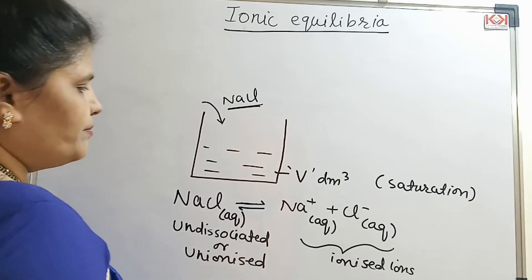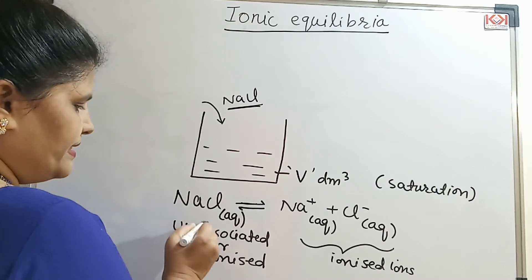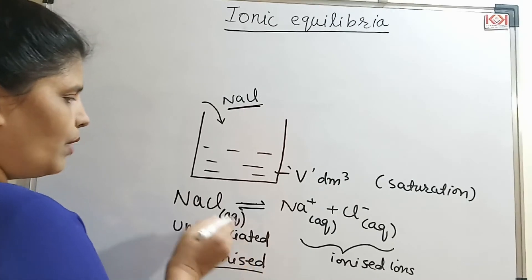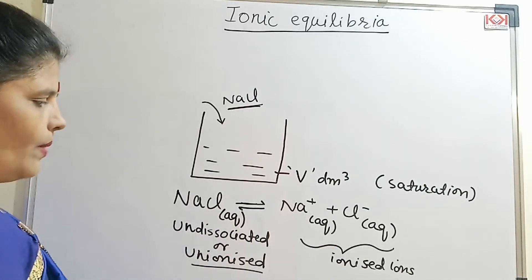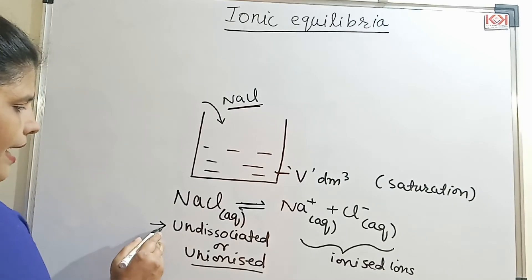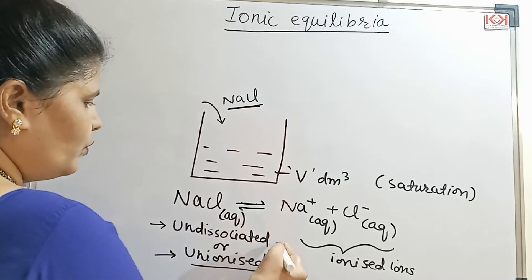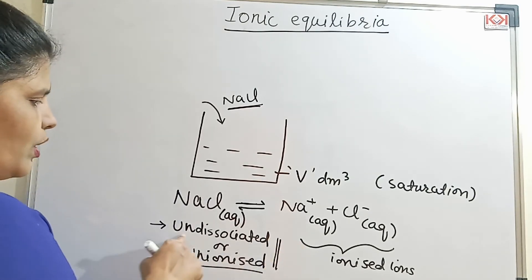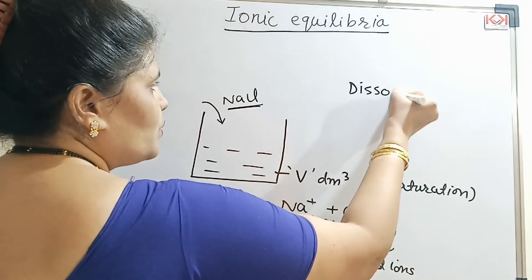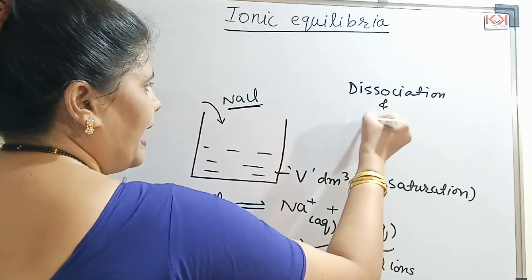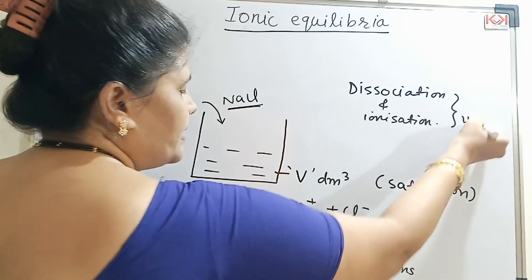When equilibrium is established between the undissociated NaCl molecule and its ionic form — that is Na⁺ and Cl⁻ — this equilibrium is called ionic equilibrium. So, what is ionic equilibrium? Ionic equilibrium is a state of equilibrium established between the unionized molecule of the solute and its ionized ions. An important question: can we use 'unionized' and 'undissociated' interchangeably? Please give your answer in the comment box.